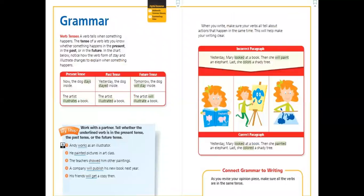Let's see the grammar lesson. Today we're going to take verb tenses. A verb tells when something happens. The tense of a verb lets you know whether something happens in present, in past, or in the future. So this is how the verb tense is used to tell you if something is going to happen, or happened already, or is happening right now in the present. This is the verb tense.